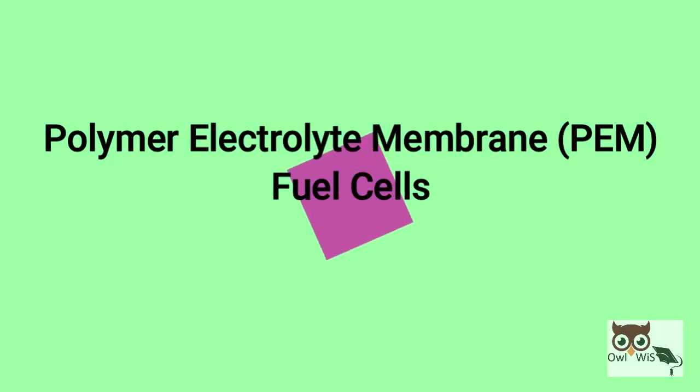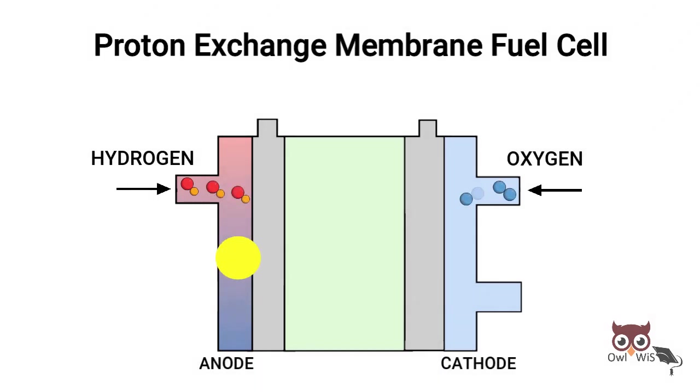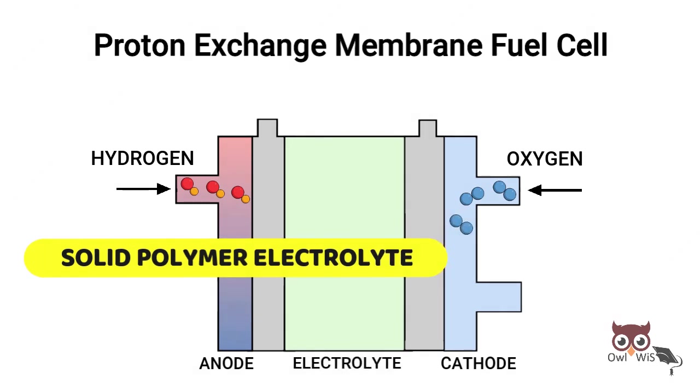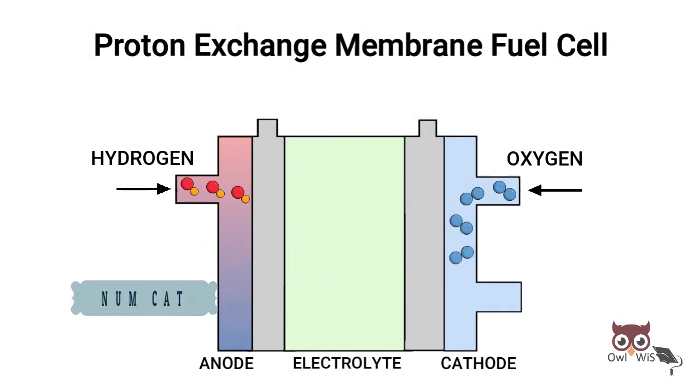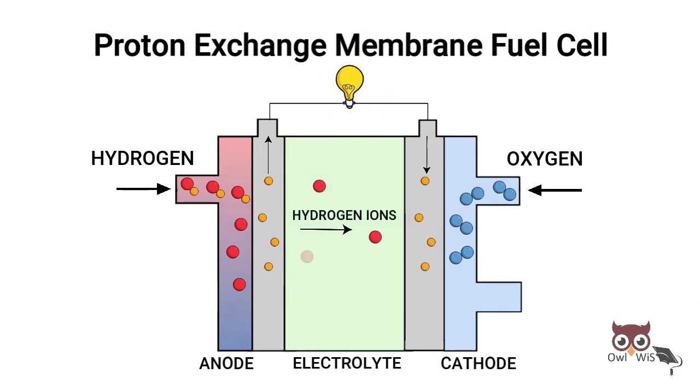Polymer electrolyte membrane PEM fuel cells, also known as proton exchange membrane fuel cells, only require hydrogen, oxygen from the air and water to operate. PEM fuel cells use a solid polymer as an electrolyte and porous carbon electrodes containing a platinum catalyst. Usually fueled with pure hydrogen supplied from storage tanks or reformers, PEM fuel cells operate at relatively low temperatures around 80 degrees Celsius. Low temperature operation allows them to start quickly.